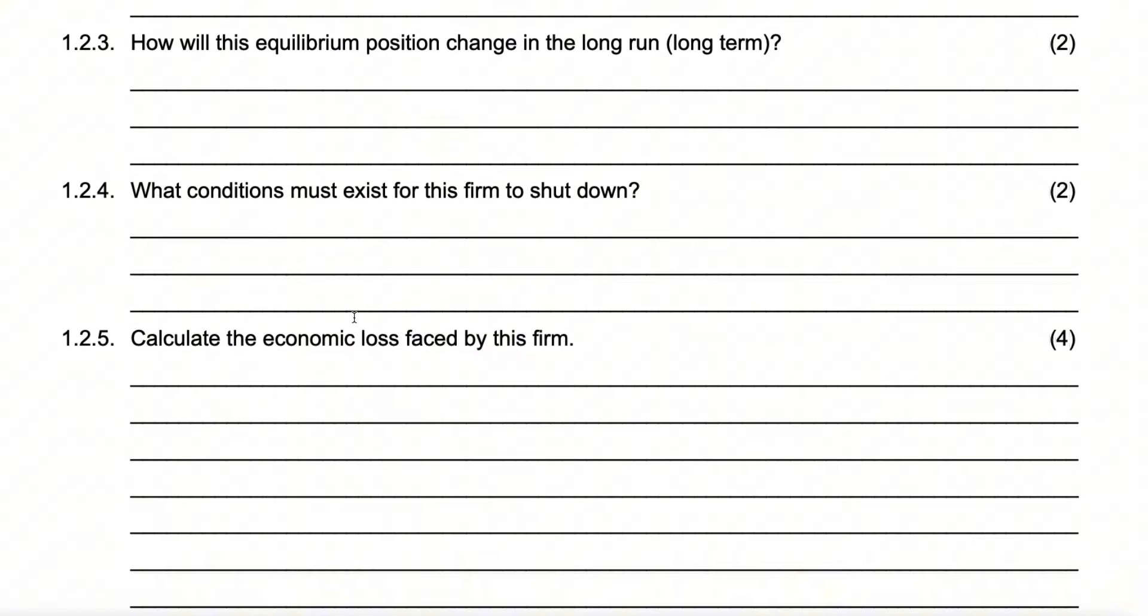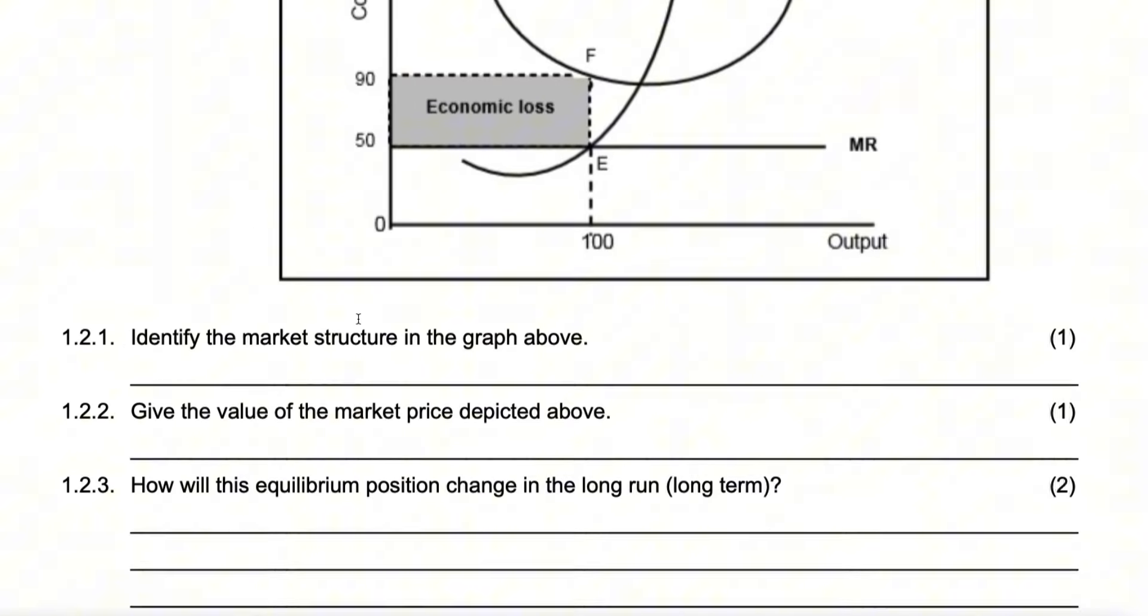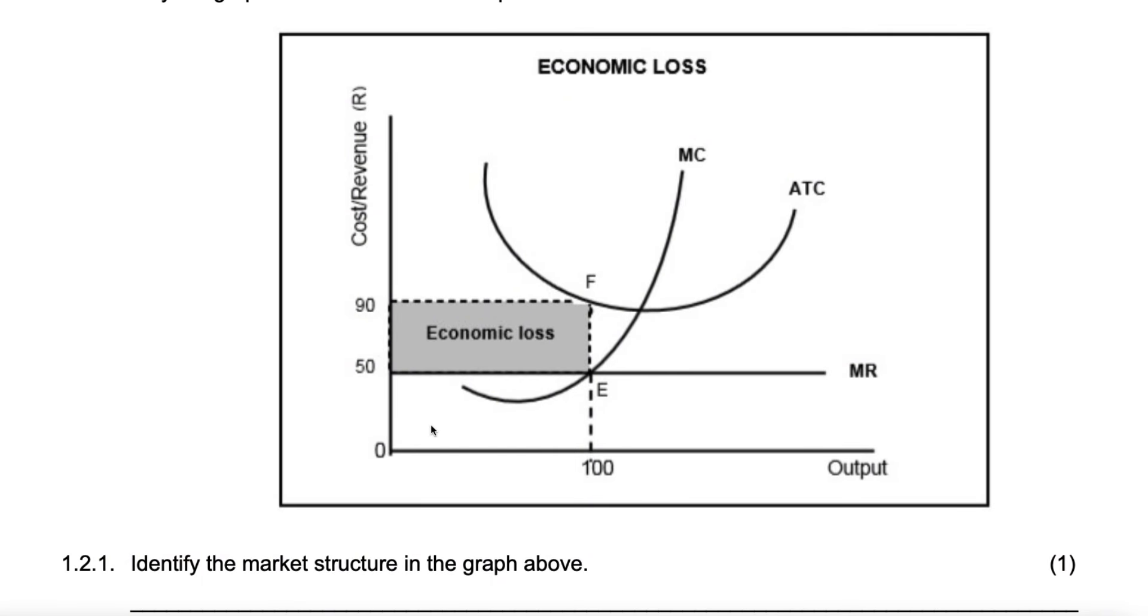Let's go to the last question. Who takes the last one? For the last question, it says, calculate the economic loss faced by the firm. So, we are going to say 50 minus 90. 50, yes. That's the price. It will minus 90, which is the cost. And then it will be equal to 40 rands. Negative 40 rands. And then multiply it by 100, which are our units. Correct. Which will give us negative 4,000 rands. That's correct. So, what if you don't put in the negative? And how will you still get the answer correct? If you don't put the negative, rather say, the economic loss made will be 4,000. So, it's either you say the economic loss made is 4,000 or you write negative 4,000. Thanks for the question.